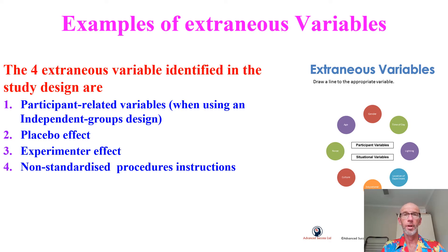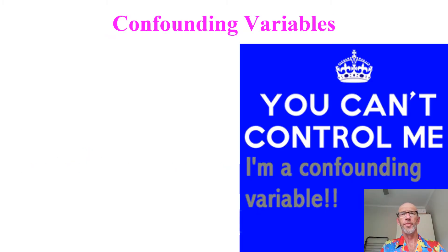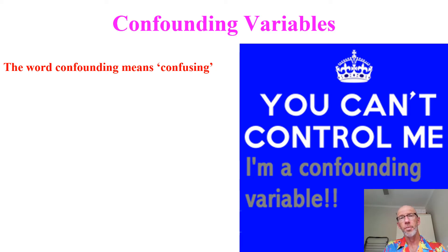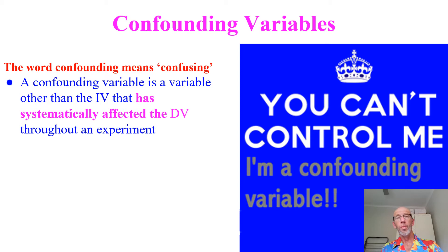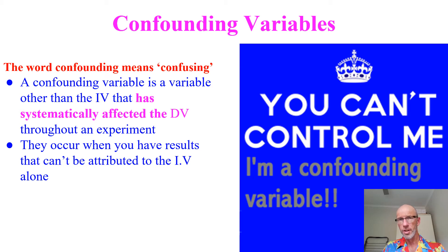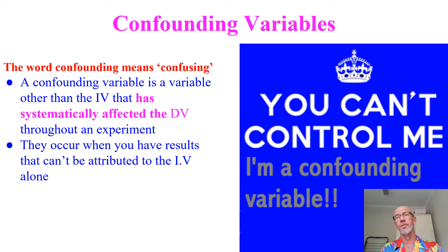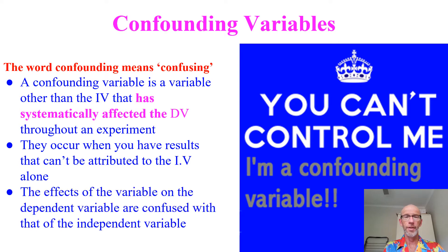In terms of confounding variables, the word confound means confused. When we have a confounding variable identified after we've conducted an experiment — perhaps identified by a third party — it is a variable other than the IV that has systematically, throughout the experiment, affected the DV. Now we're confused: to what extent was the manipulation of the independent variable affecting the DV, and to what extent was this other unanticipated variable affecting it? We've got an experiment where we can't draw a valid conclusion.